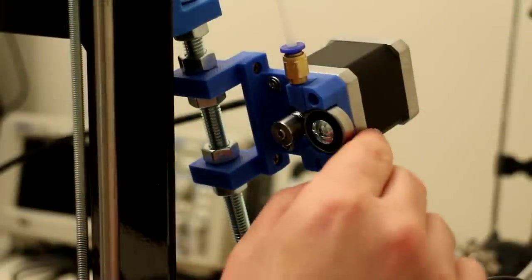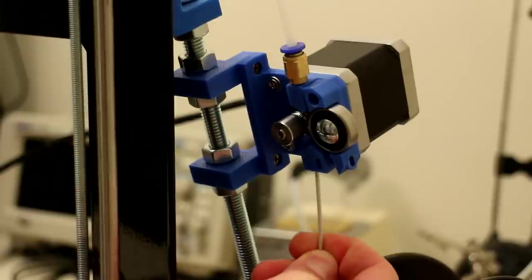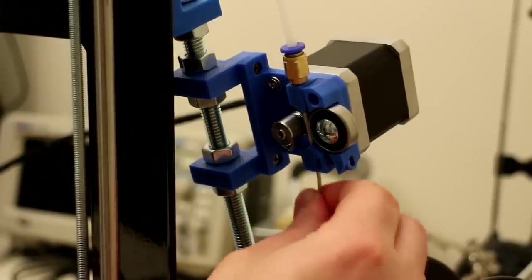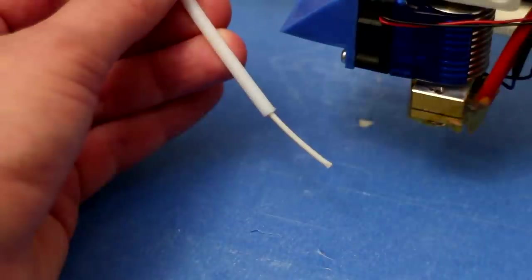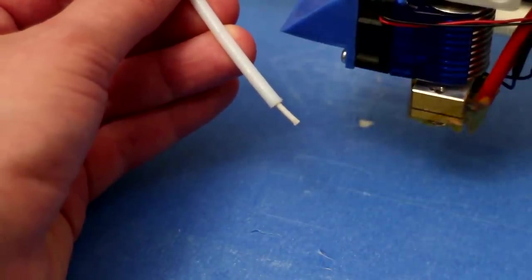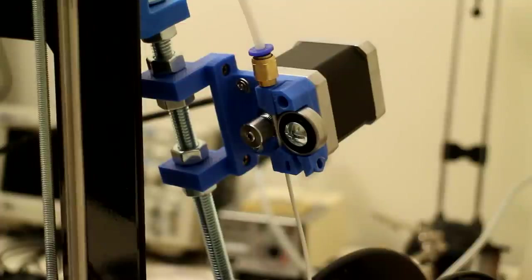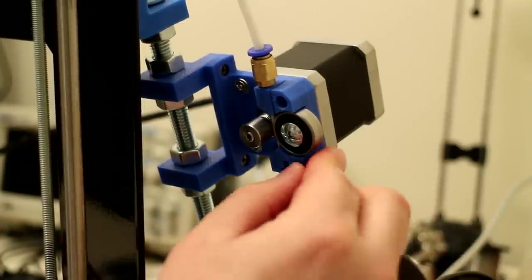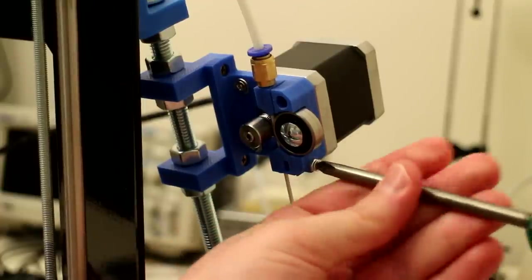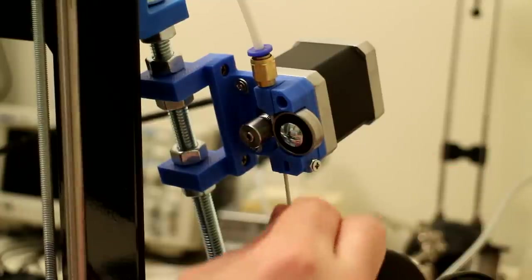To load the filament, simply pull back the idler bearing, insert the filament at the base of the Bowden extruder, slide the filament through the Bowden extruder, past the Mark 7 gear and into the Teflon tube. Manually slide through enough filament so the end of the filament is flush with the end of the Teflon tube. Push the idler bearing up against the filament. Install the M3 by 15 screw into the idler. Tighten the screw quite tight. Done. Filament is installed.